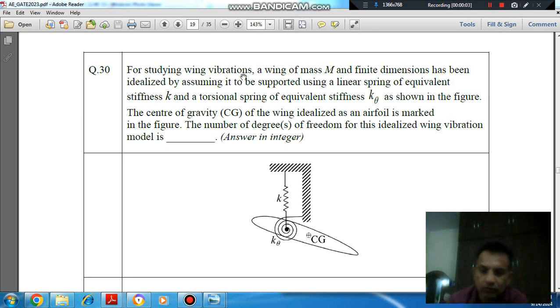Hello, welcome again. We are solving a 2023 aerospace engineering paper, question number 30. For studying wing vibration, a wing of mass M and finite dimension has been idealized by assuming it to be supported using a linear spring of equivalent stiffness K and a torsional spring of equivalent stiffness K_theta as shown in the figure.